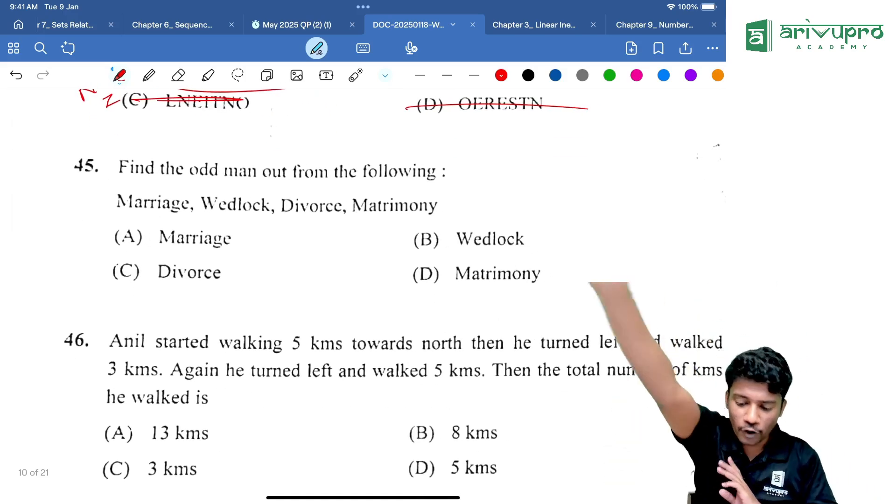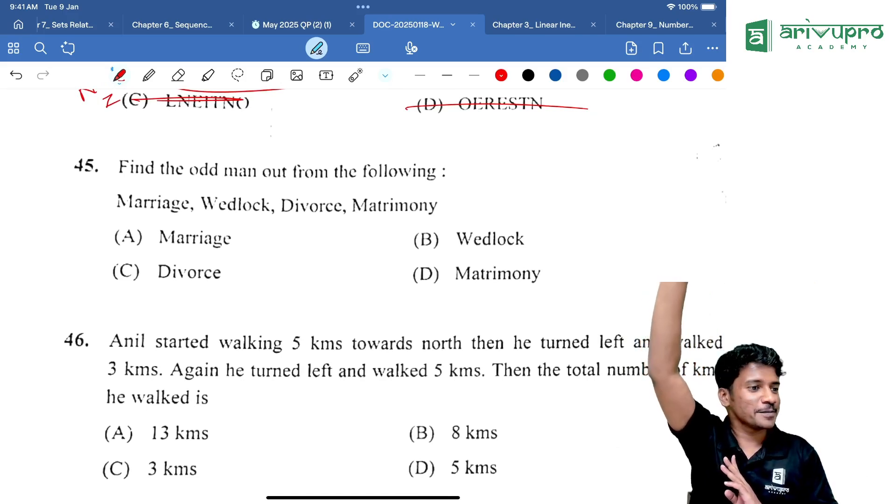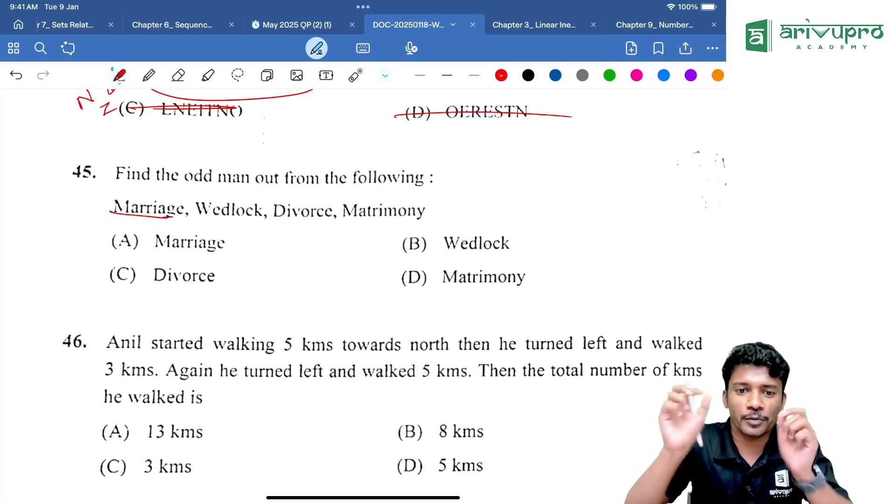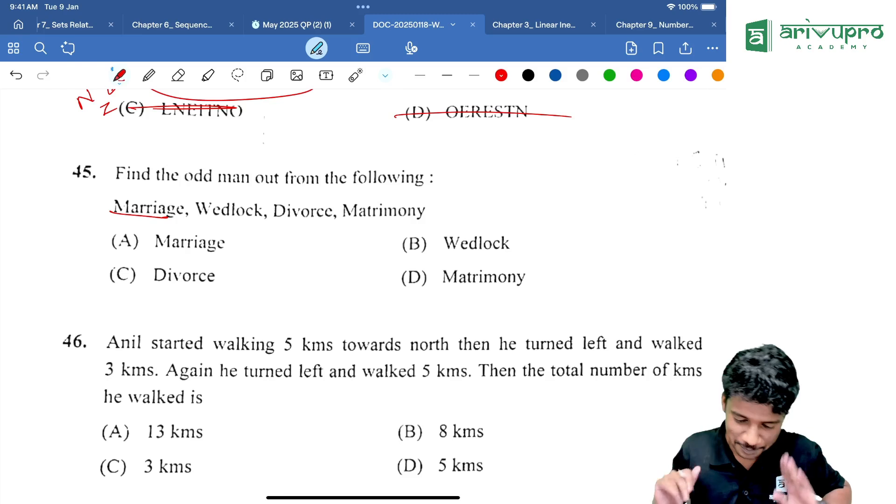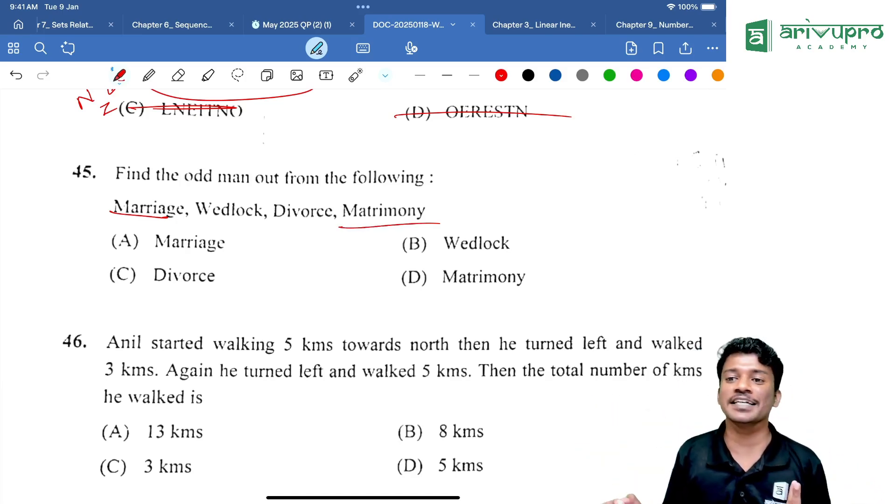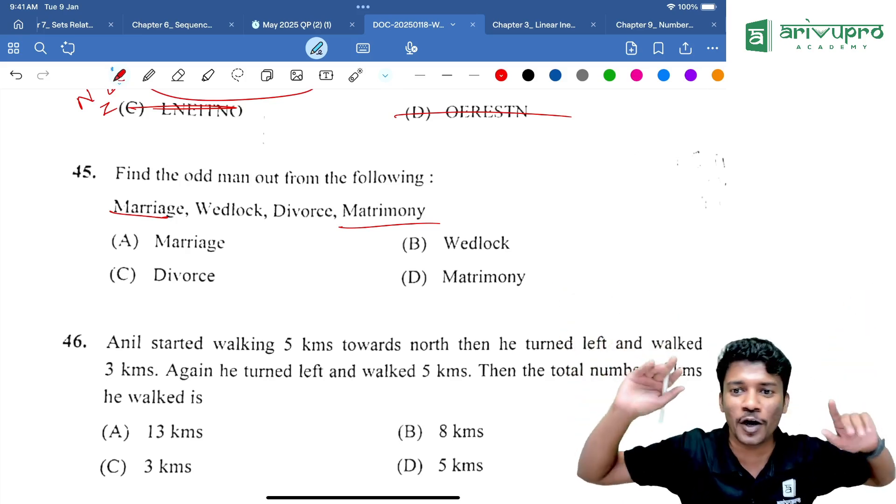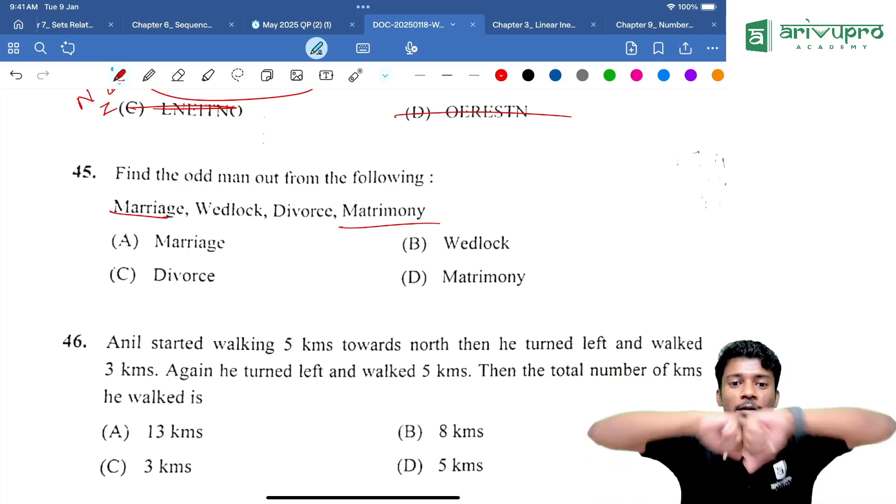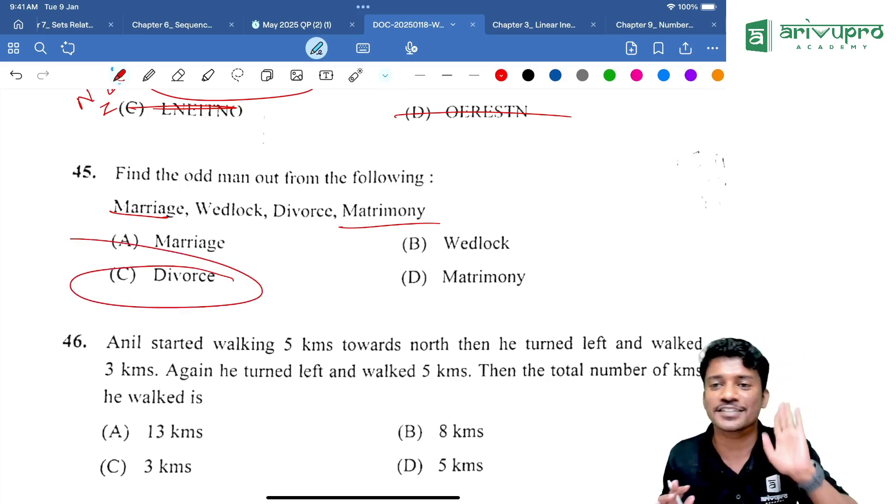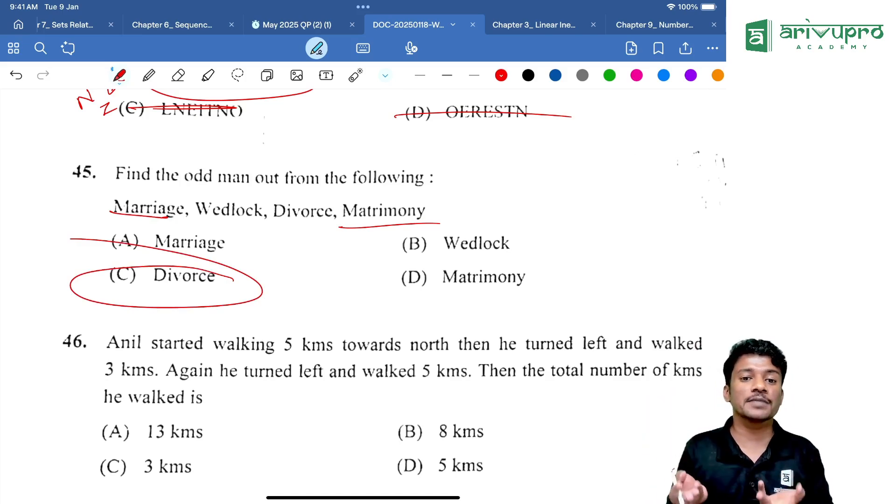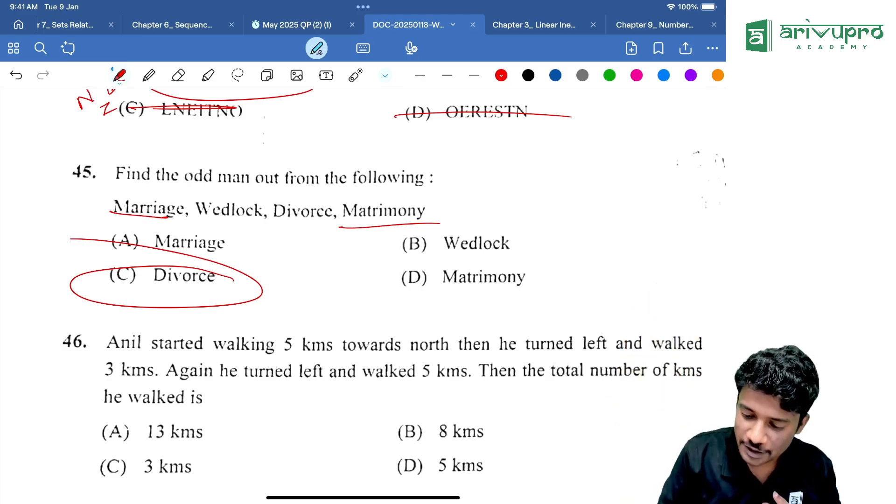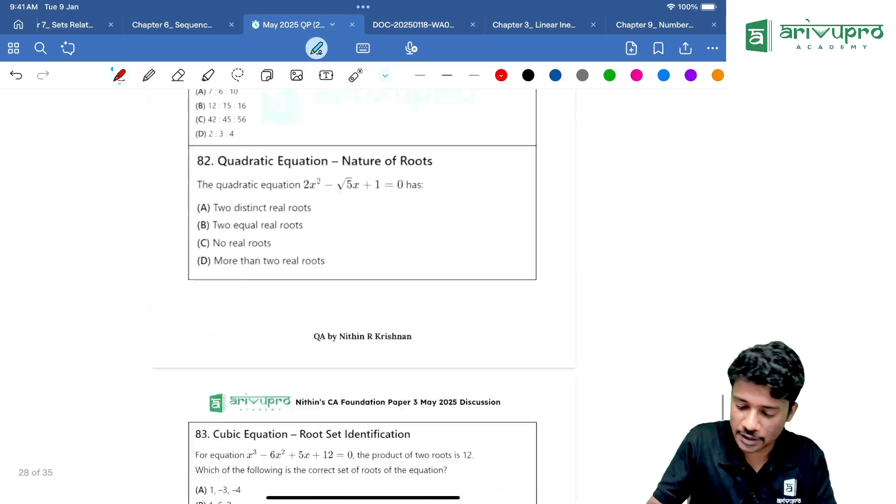Find the odd man out of the following. Wedlock, marriage, then wedlock is also something related to getting married. Then matrimony is also something related to married. Then what is divorce? Answer is divorce. Option C is the answer. Sometimes they can ask like this also.